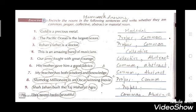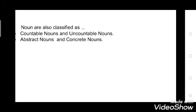If you have not done your homework, do it now. Now let's move into classification of noun. Noun is classified into two parts: the first is countable noun and uncountable noun; the second is abstract noun and concrete noun.